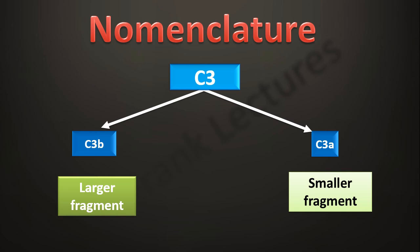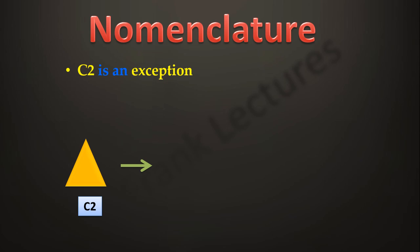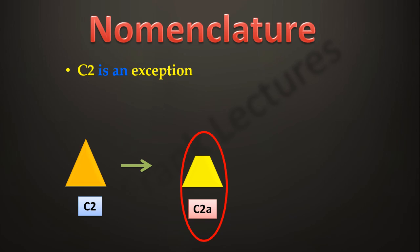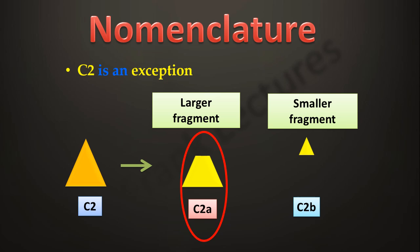It is the larger fragment — that is, the fragment with the suffix 'b' — which contributes to the next enzymatic activity in the cascade. Thus in this case, C3b will contribute to the next enzymatic activity. Complement protein C2 is an exception, because in this case the larger fragment is C2a, not C2b. So when complement protein C2 is cleaved, the larger fragment is C2a and the smaller fragment is C2b.